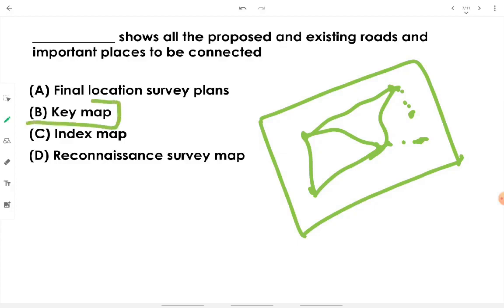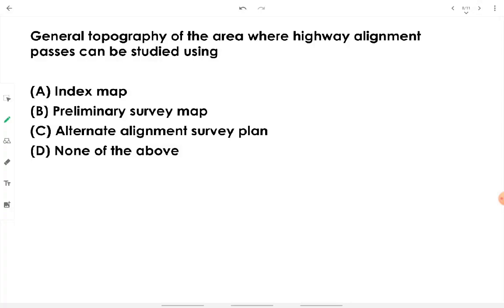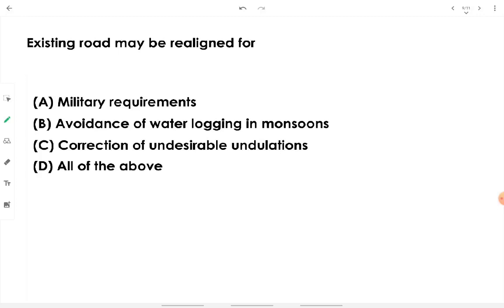General topography of the area where highway alignment passes — including vegetation cover, mountains, hills, and all natural and man-made features — can be studied using an index map. In highway alignment studies, these topographical maps are referred to as index maps.